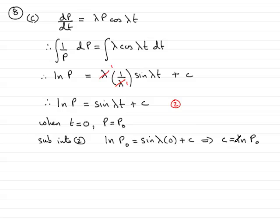If I sub this back into equation 2, I have ln p = sin λt + ln p₀. Now I've got to rearrange this to make p the subject. So we bring the logs to one side by subtracting ln p₀ from both sides. So we have ln p - ln p₀ = sin λt.